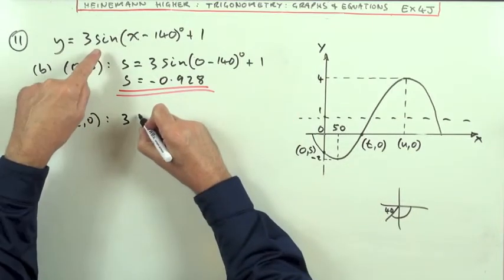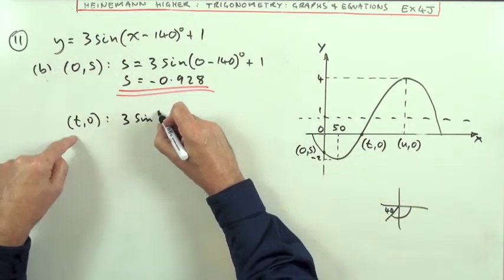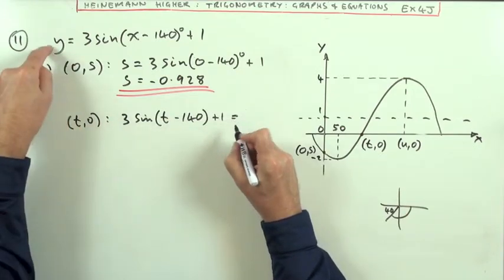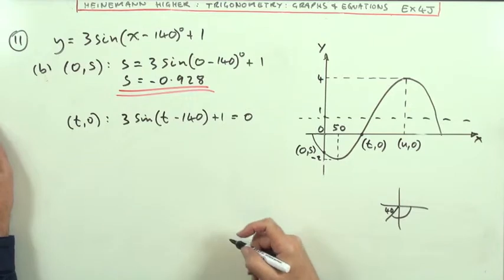So this time it says Y is 0. I'll put that on the other side. So I've got 3 sine, now X is T, minus 140 plus 1 equals Y, which is 0. So I've got that for the equation to solve.